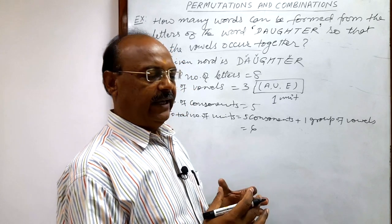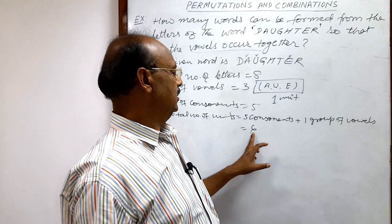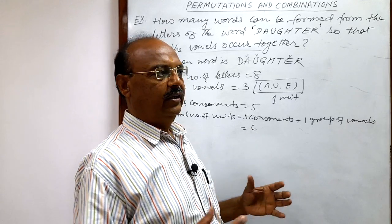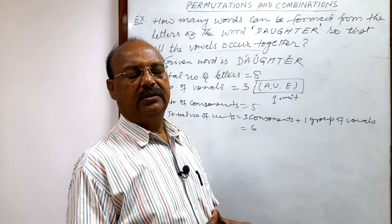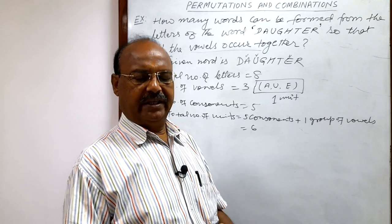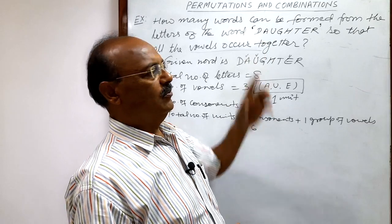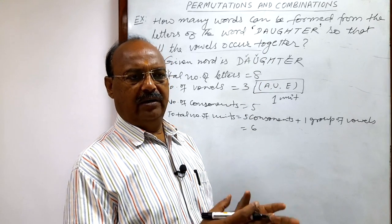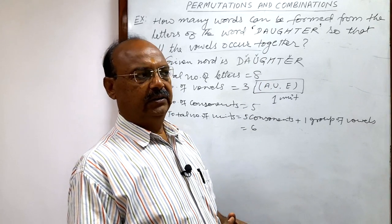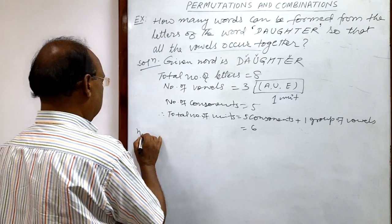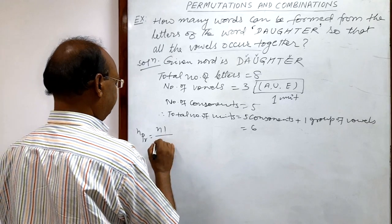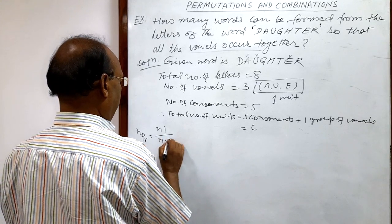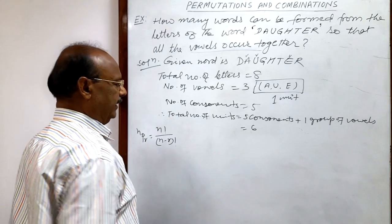So we have to arrange these 6 units in all the possible manner. In how many ways? 6P6. In this chapter, we have already discussed the formula nPr, is not it? We know the formula nPr is equal to n factorial by n minus r factorial.